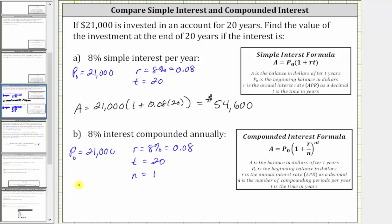The amount A after 20 years, using 8% interest compounded annually, is equal to 21,000 times the quantity one plus R divided by N, which is 0.08 divided by one. Because we're dividing by one, we could leave that off. Raise to the power of N times T, where N is one and T is 20, giving us an exponent of 20.